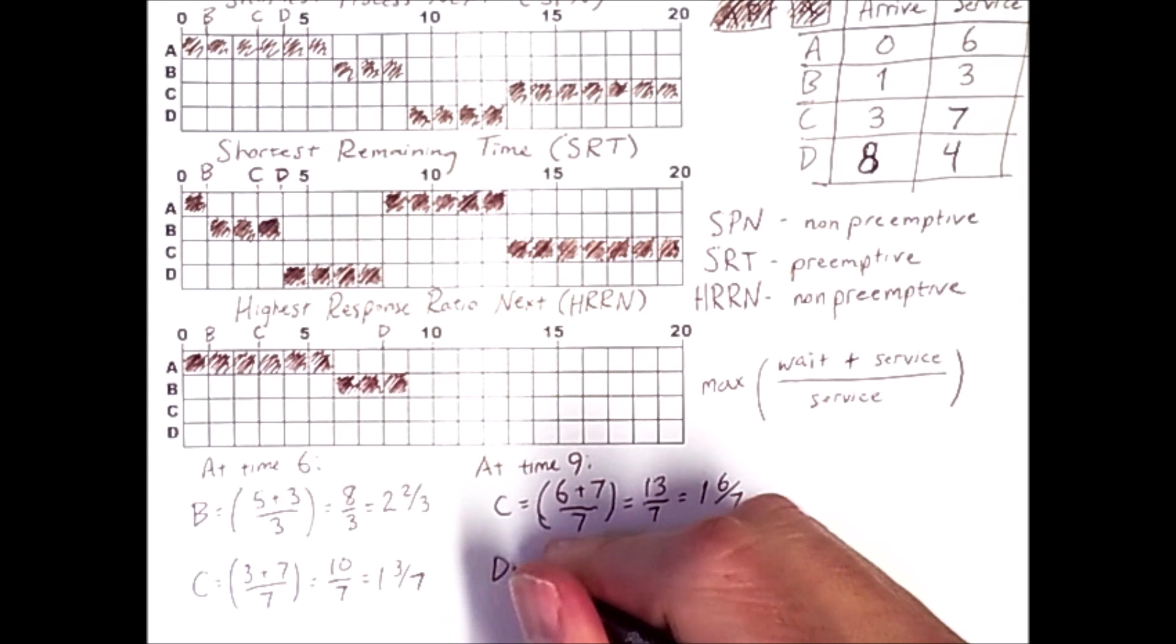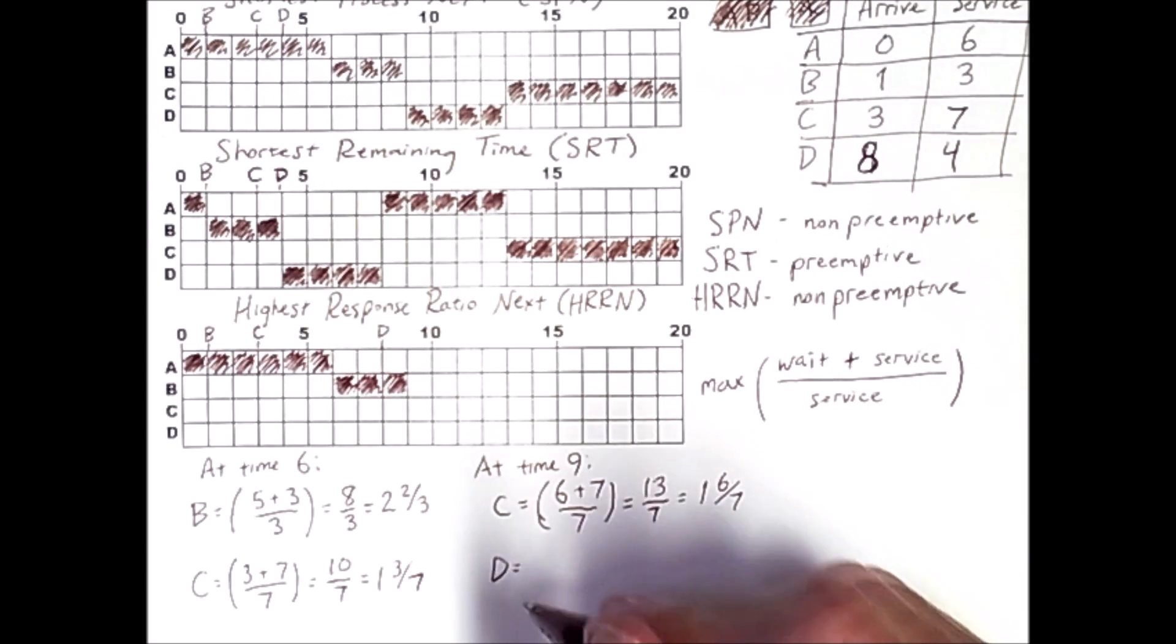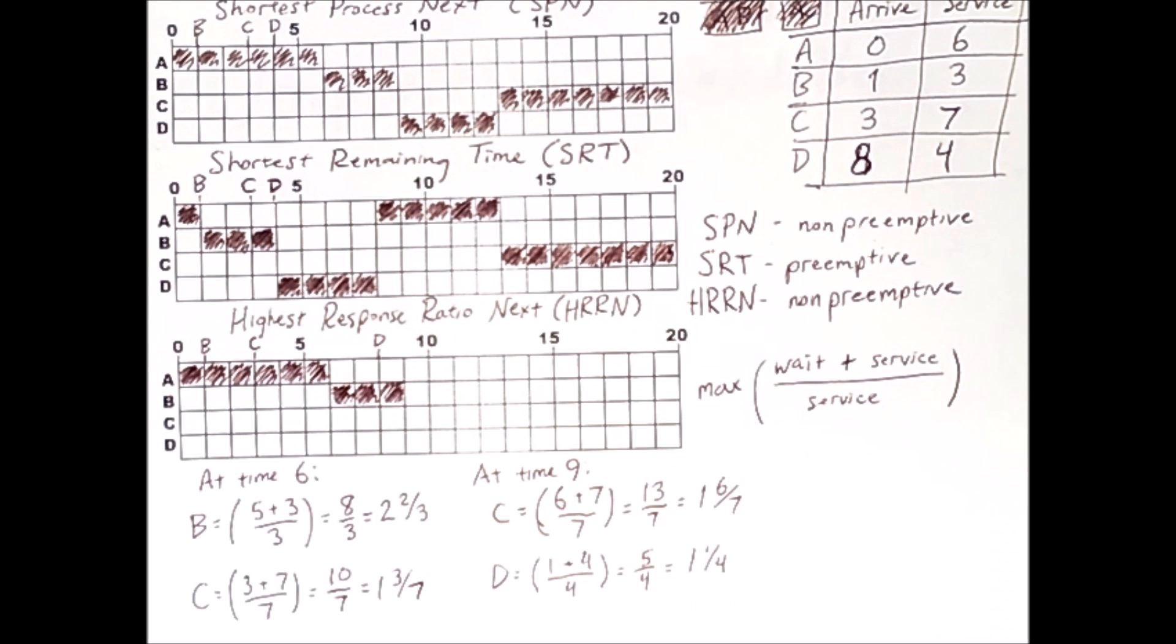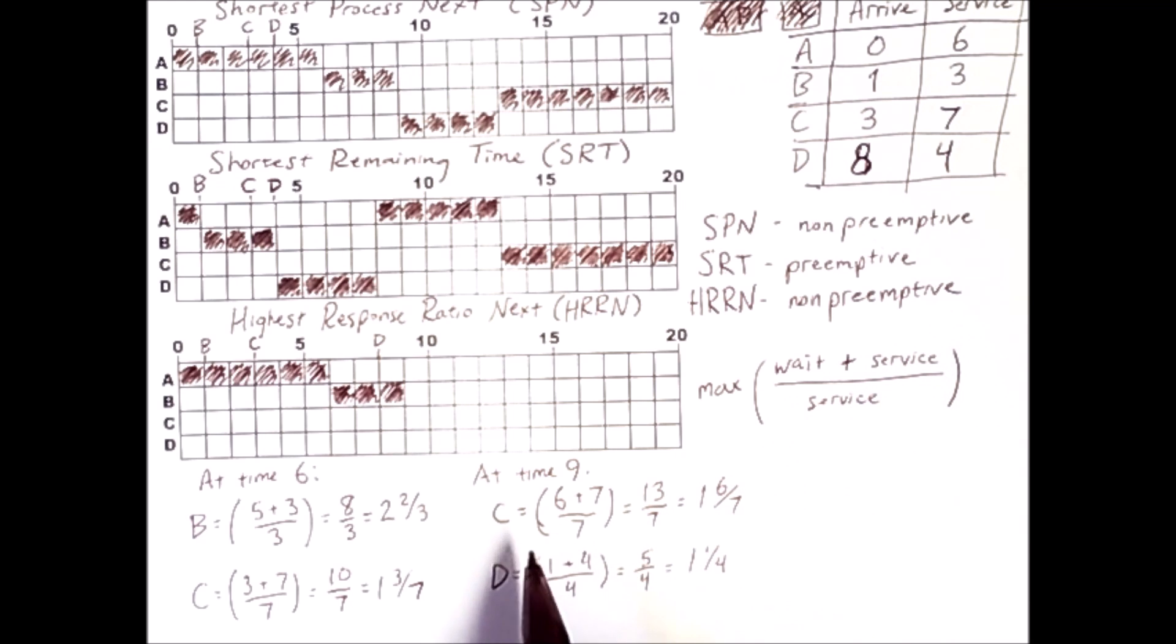Process D just arrived at time 8. So 9 minus 8 is 1 plus a service time of 4 equals 1 and 1 fourth. Now 6 sevenths is greater than 1 fourth. So C actually gets to run next.